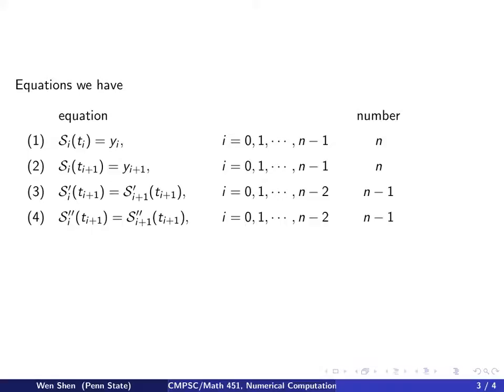Comparing to the total number of unknowns, which is 4n, I see that I need 2 more equations. So 2 more conditions are still missing.